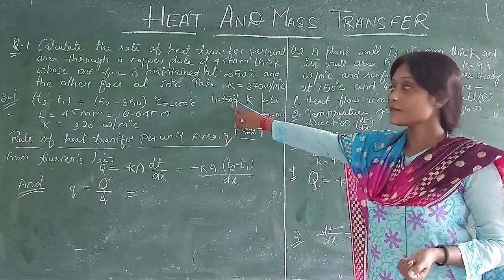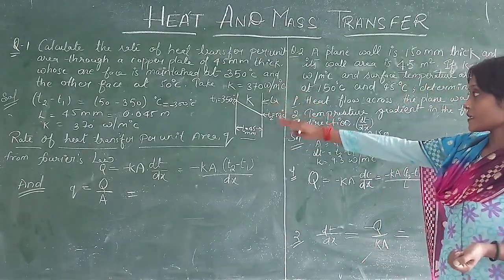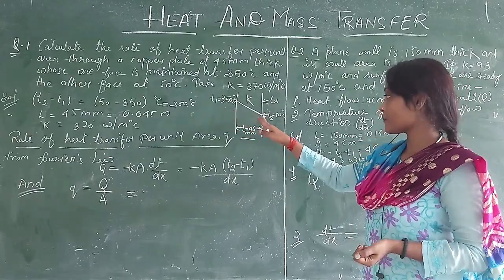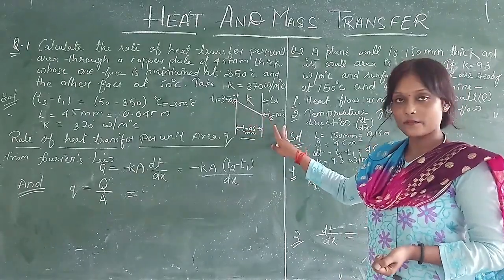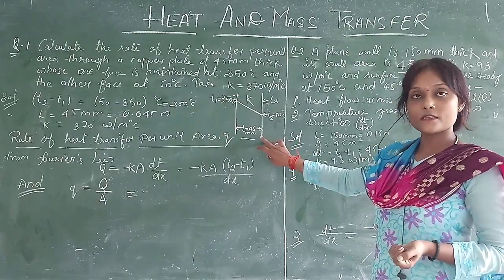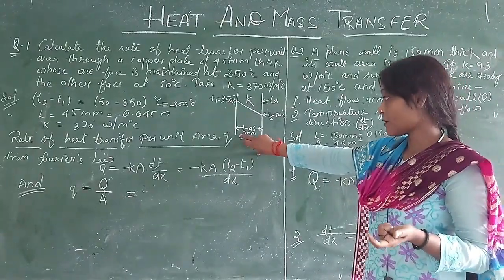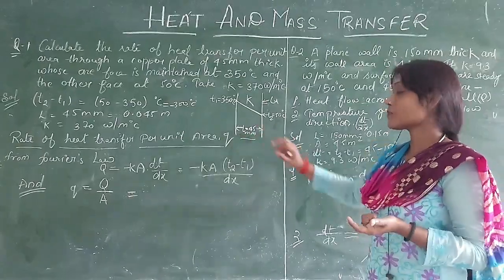At 350 degree centigrade and the other phase at 50 degree centigrade. Here we have two copper plates. We have a temperature difference between them, and the distance or thickness of the range which we have denoted here is 45 mm.